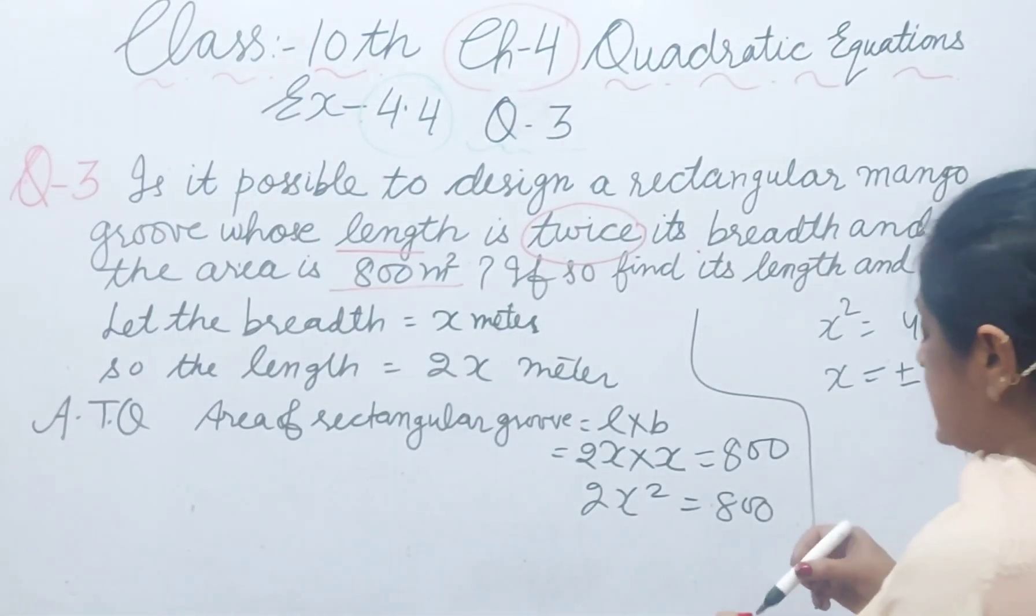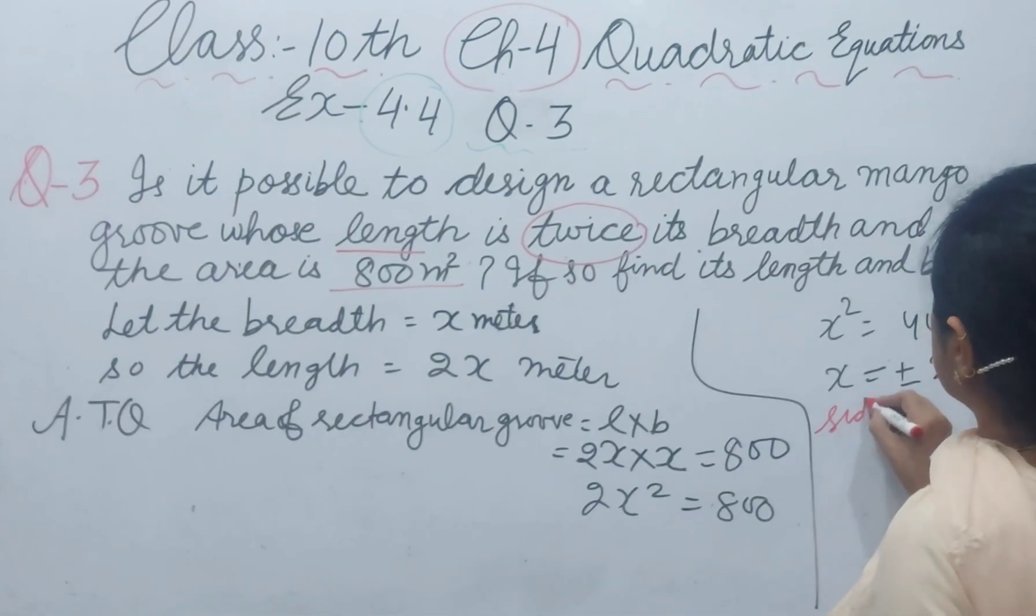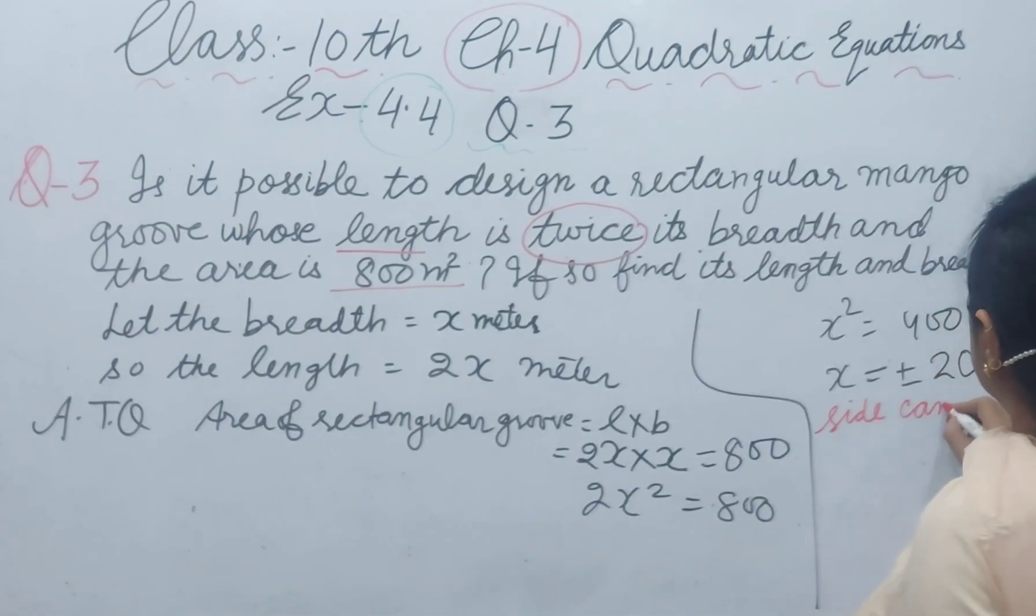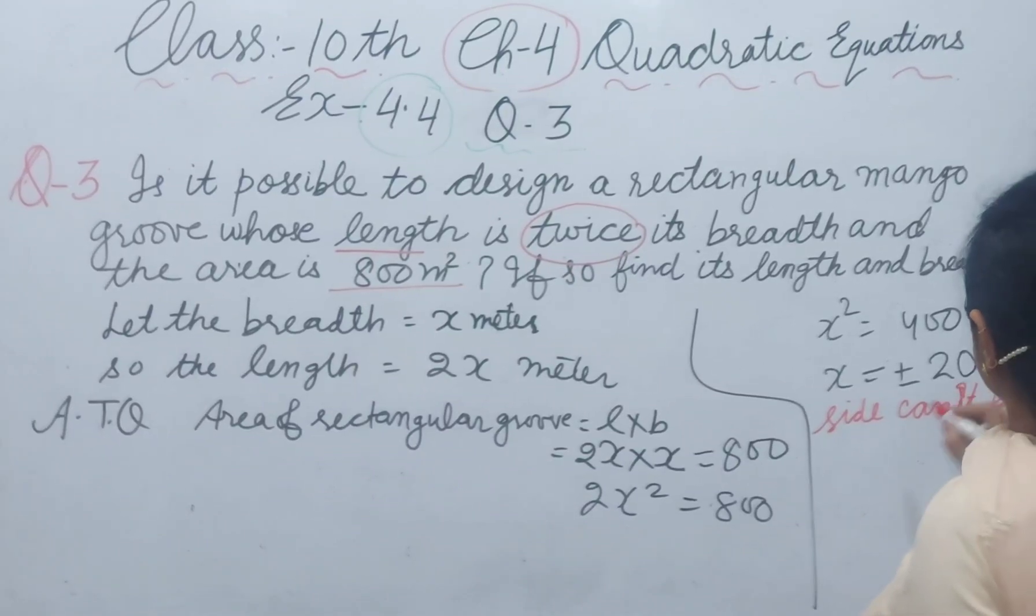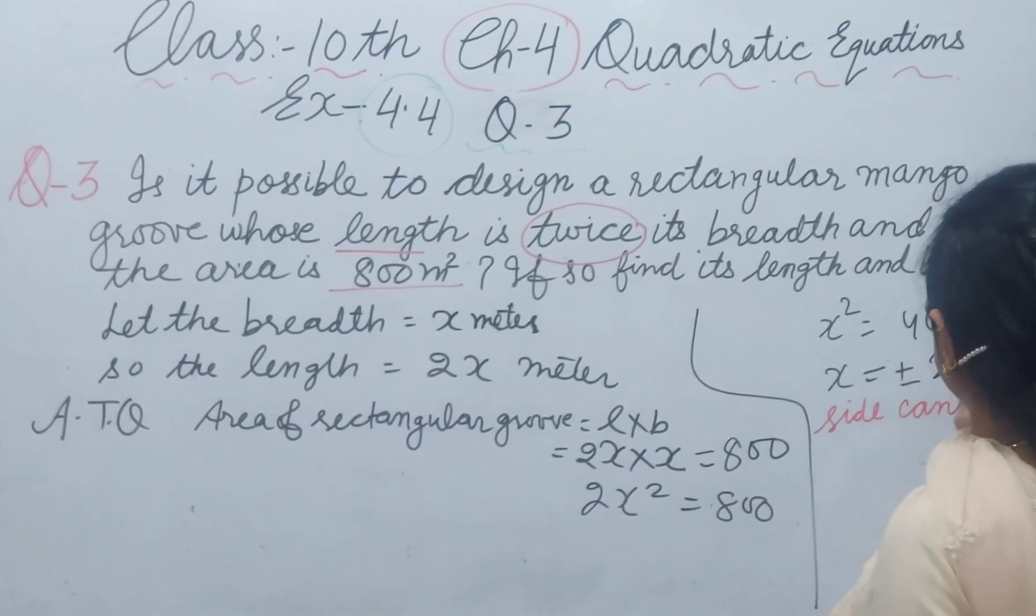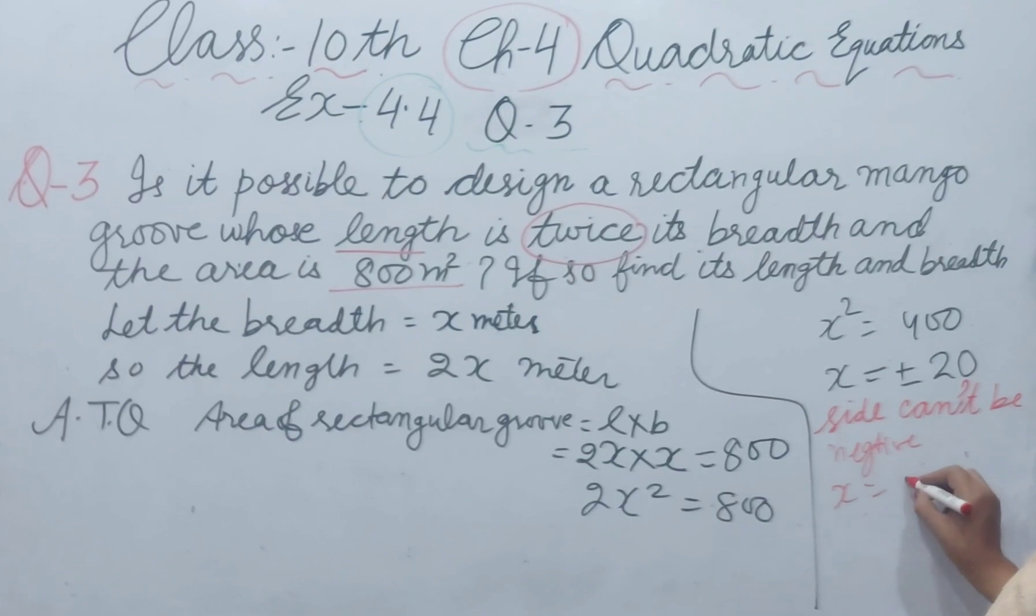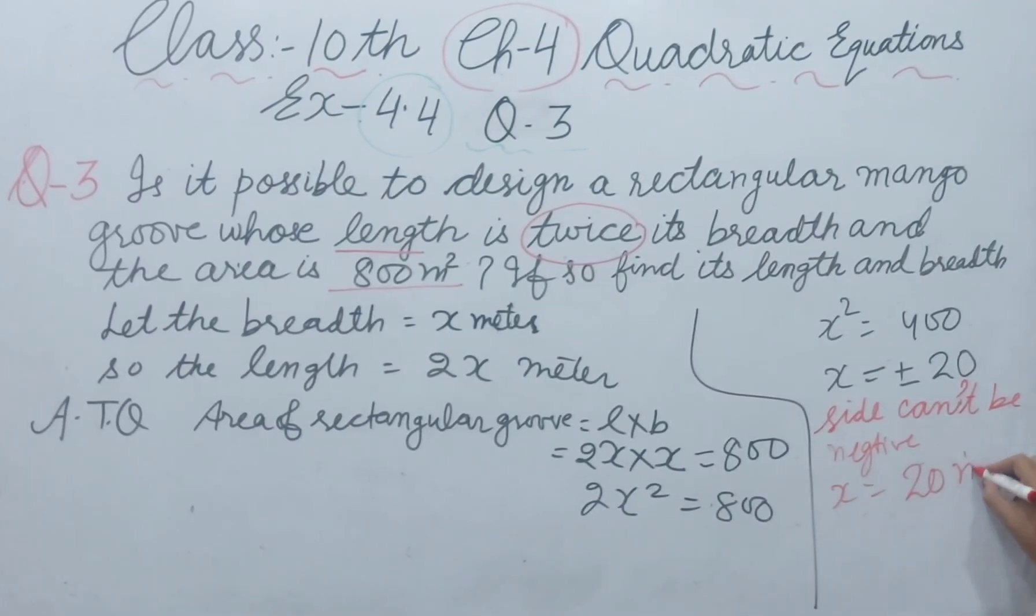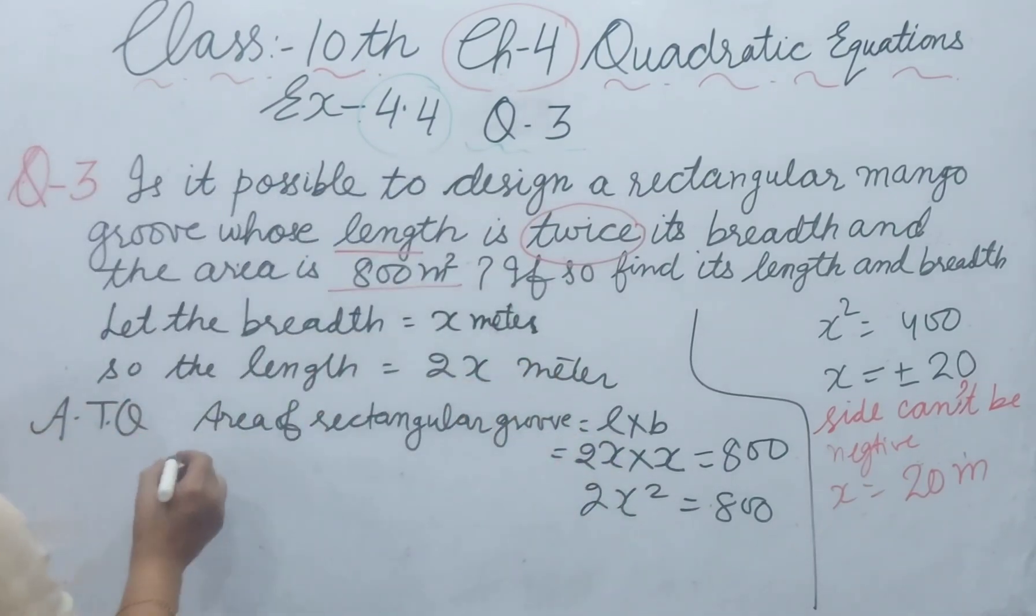Side cannot be negative, so x value is 20 meter positive. This is our breadth.